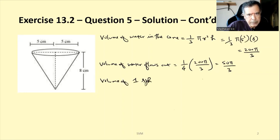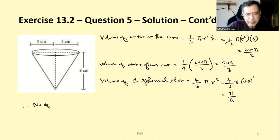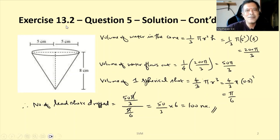Volume of one spherical shot = (4/3)πr³ = (4/3)π × (0.5)³ = π/6. Therefore, number of lead shots dropped = (50π/3) ÷ (π/6). π cancels, giving 50/3 × 6 = 100. That is the solution.